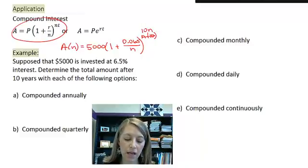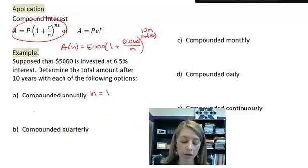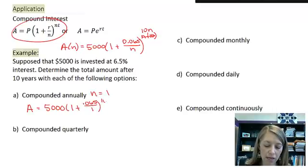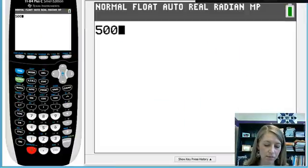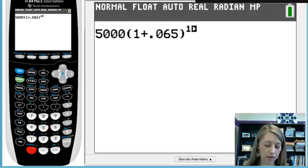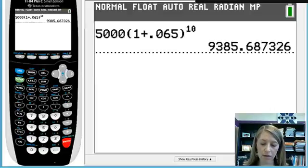If I compound it annually, then my n is going to equal 1. So my amount is going to be 5,000 times 1 plus 0.065 over 1 to the 10 times 1, or just 10. And so if you plug this in your calculator, 5,000 times 1 plus 0.065 to the 10 gives me $9,385.69.